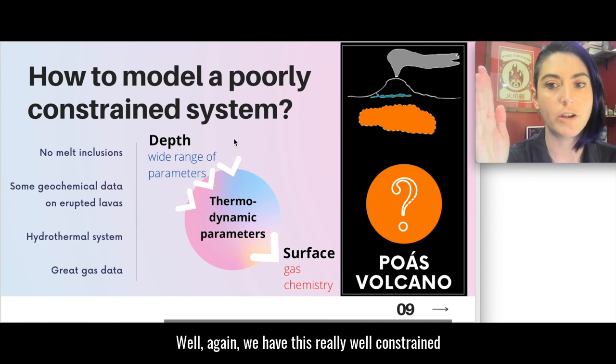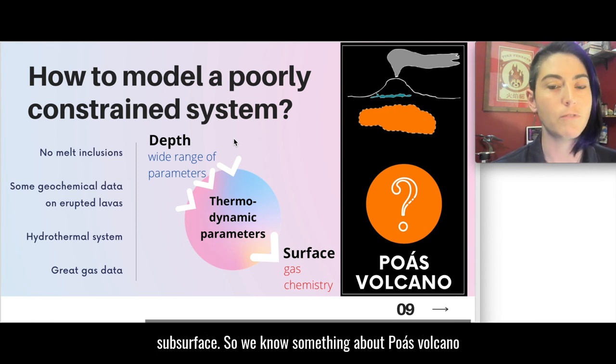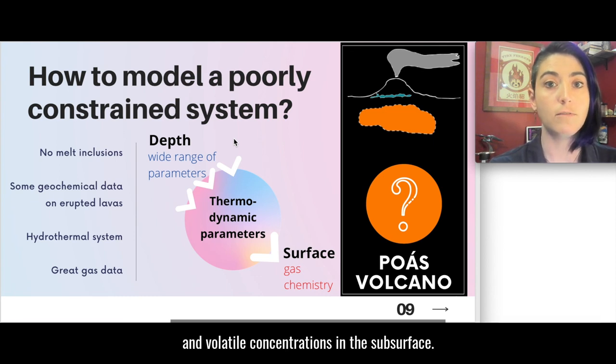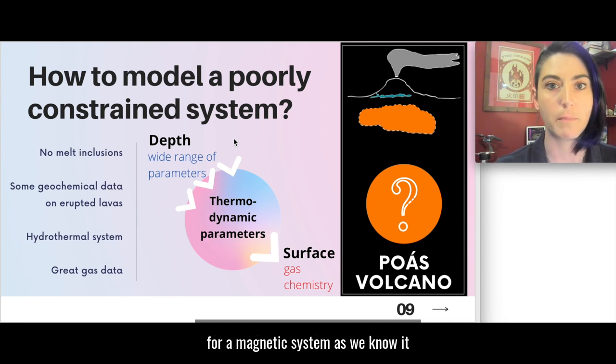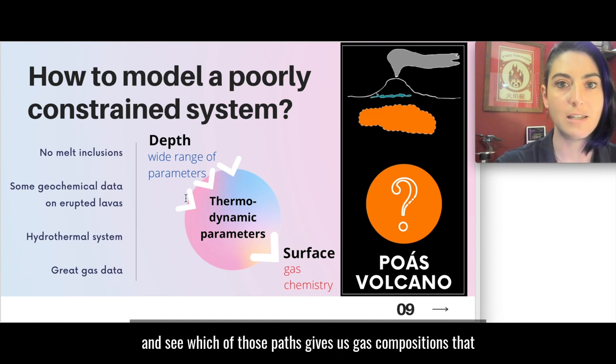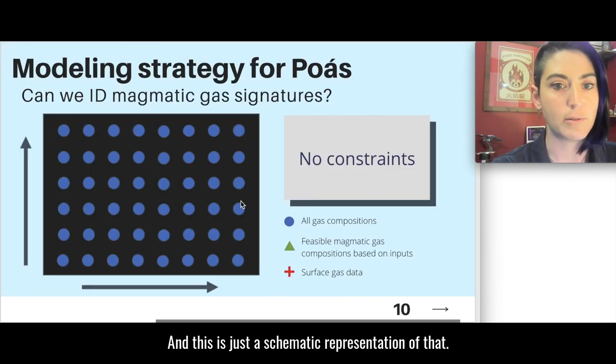Well again we have this really well constrained endpoint of the surface gas and we can imagine a set of parameters that could describe the subsurface. So we know something about Poas volcano and we know something about volcanoes in general. So we can come with a range of parameters, a range of pressures, temperatures, oxygen fugacities, and volatile concentrations in the subsurface that might be possibly feasible. Anything outside of this imaginary range is just not possible for a magmatic system as we know it. And so we can take a very wide set of parameter values, put that into our model, and see which of those paths gives us gas compositions that match those that we measure in the field. And this is just a schematic representation of that.